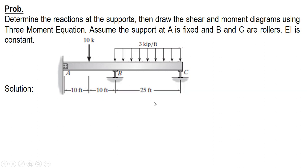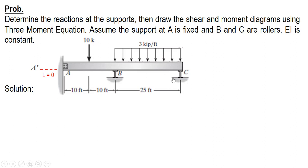Now, in using the three-moment equation, if there is a fixed support, what you will do is extend and create an imaginary span. We can denote this as A-prime, and the length of A-prime to A is zero — an imaginary span. So we use three points: let's start with A-prime, A, and B, and then after that we will use A, B, and C.